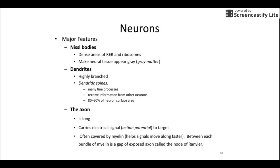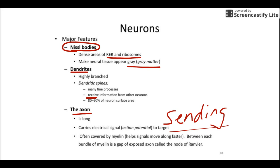The endoplasmic reticulum in neurons is often referred to as the Nissl bodies — they appear as big dark gray areas, and that's actually what makes a lot of nervous tissue appear gray, which is why we call it gray matter. The dendrites are really short and highly branched — they are the receiving portion. The axon is much longer and carries electric signals out and away; it's the sending portion. The axon is also where you'll see the myelin that helps signals go faster, and the gap between myelin segments is called the nodes of Ranvier.